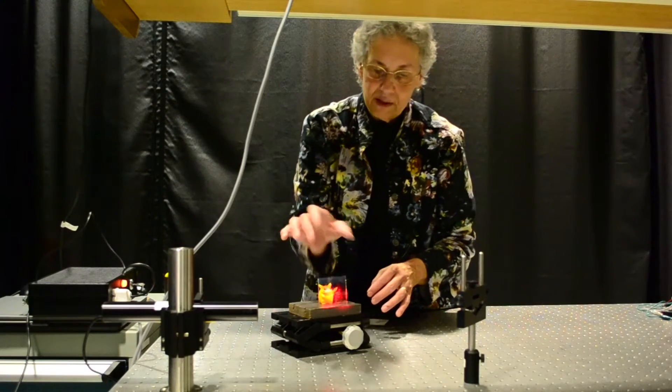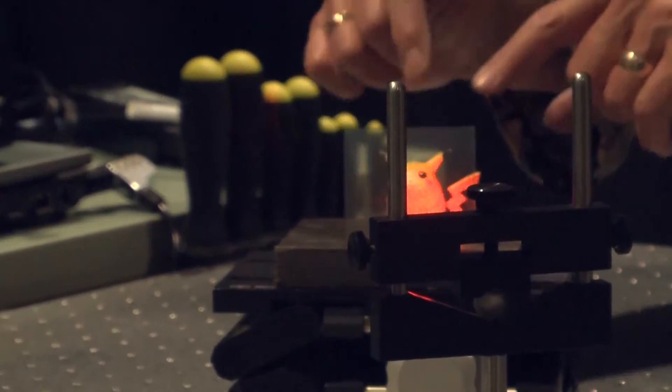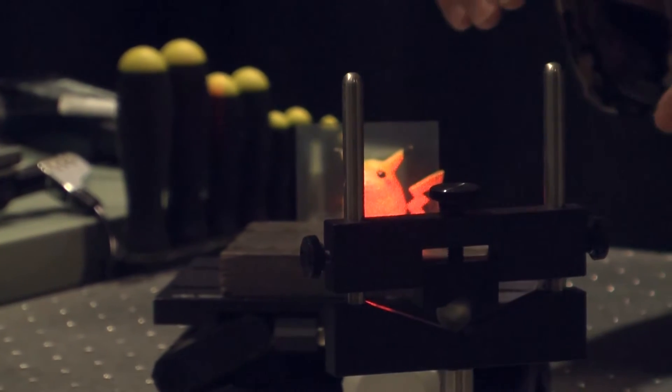So some light strikes the plate, strikes the emulsion, which is back here. Some light passes through the emulsion, strikes the object, and then goes and hits the plate.